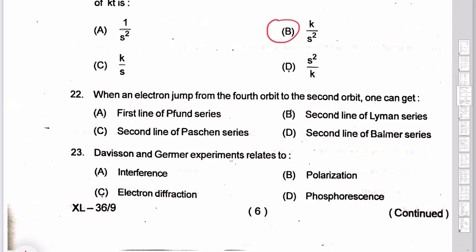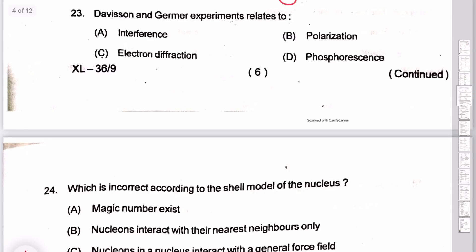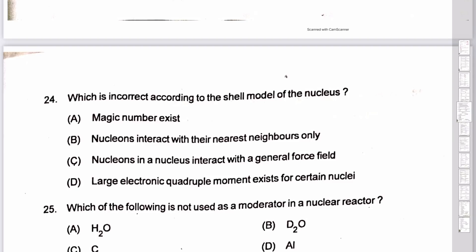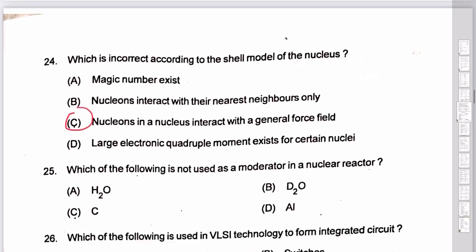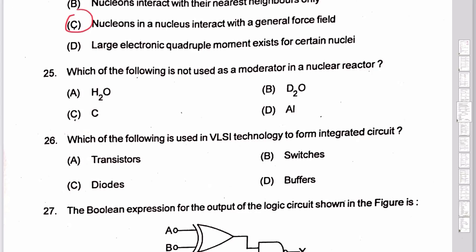The electron jumps from the fourth orbit to the second orbit — that is the Balmer series. Option D. Then electron diffraction: option D, as seen in the previous video. Option D again for quadrupole moment. Which material is not used to moderate a nuclear reactor? Heavy water and carbon are used, but aluminum is not.